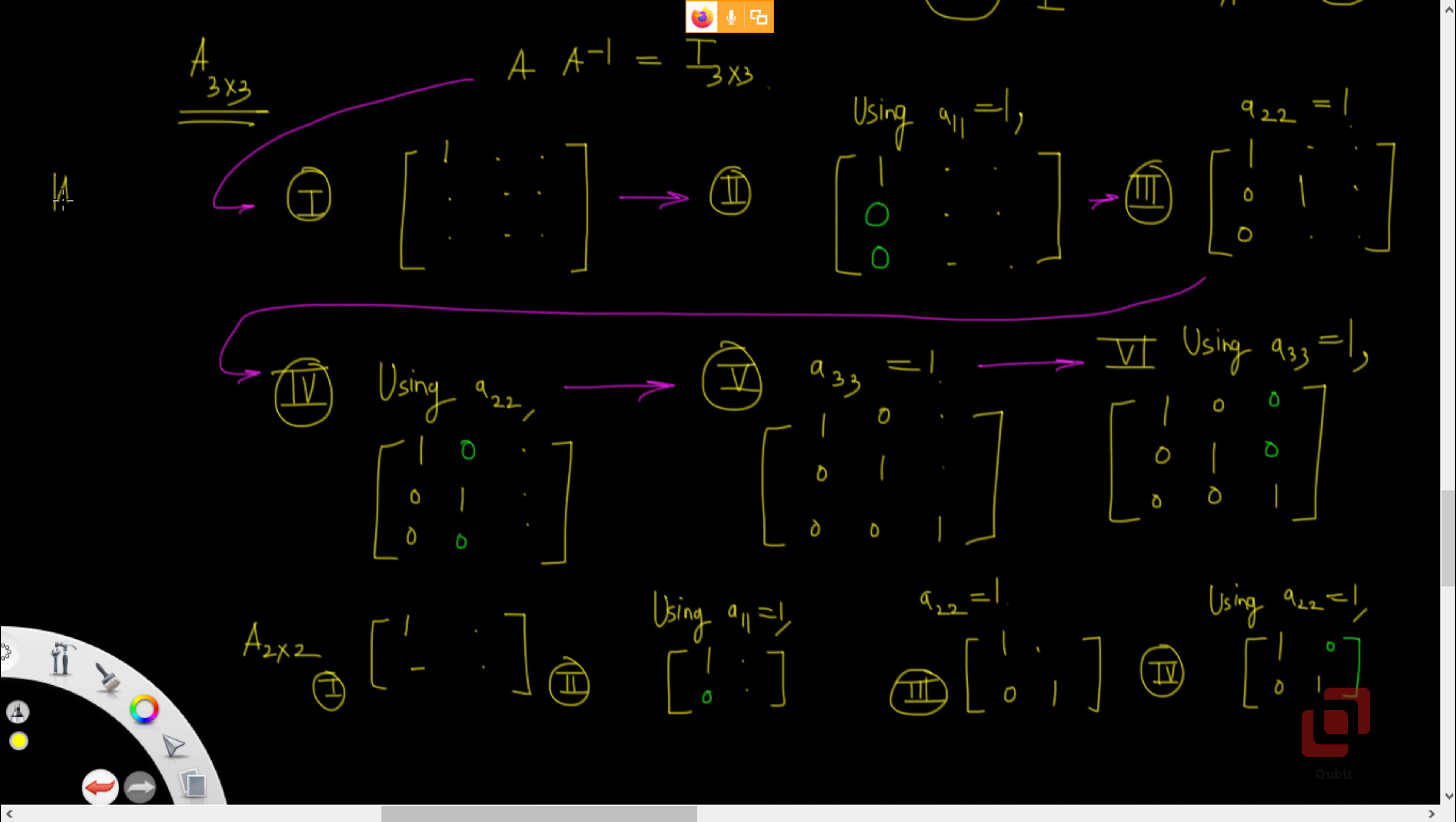The only thing is that it should be non-singular. The benefit of the algorithm or the steps which we have written down here is that you can write a computer program for this. In fact even a scientific calculator can give you the inverse of the 3x3 matrix very quickly.